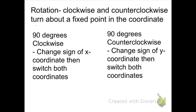Rotation is the clockwise and counterclockwise turn about a fixed point in the coordinates. There are two types of rotation: 90 degrees clockwise and 90 degrees counterclockwise.